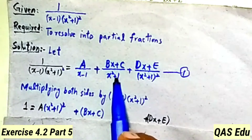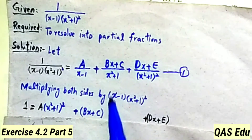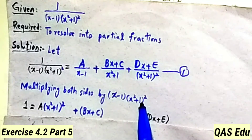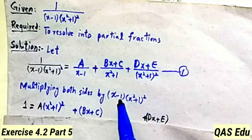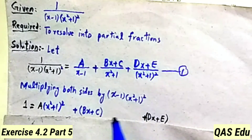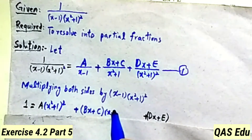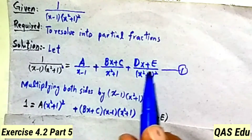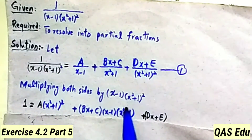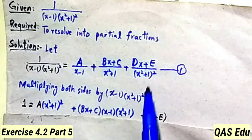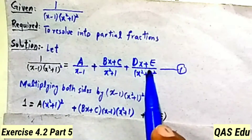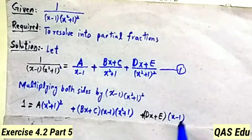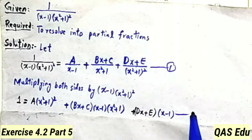Bx plus C multiplied by x square plus 1, then x minus 1 into x square plus 1 whole square. One x square plus 1 cancels, leaving Bx plus C times x minus 1. Similarly, Dx plus E multiplied by x minus 1 remains, giving us equation number 2.